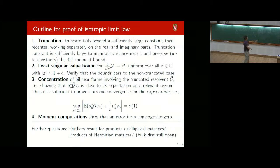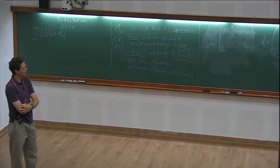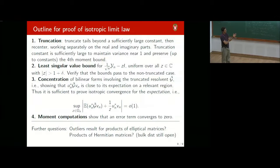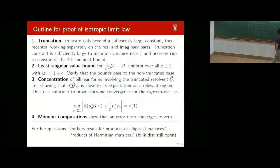In the Q&A, a question arises about free probability as a route to the bulk measure. The speaker notes that in the O'Rourke-Renfrew-Sodin paper, free probability is discussed as a way to predict what the bulk limiting measure will be. Free probability can be thought of as organizing all moment computations together like a generating function. However, whether it can zoom in on microscopic features like outliers is unclear.